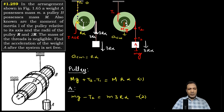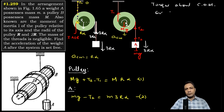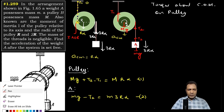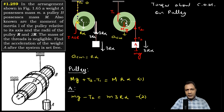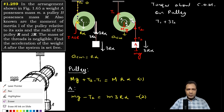Finally, applying torque about the center of mass of the pulley: the torque due to T1 acts at radius r from the center, and the torque due to T2 acts at radius 2r from the center — noting that 3r is the distance from the IAR to the outer string, but 2r is the distance from the center of mass. Both torques are clockwise and add up.